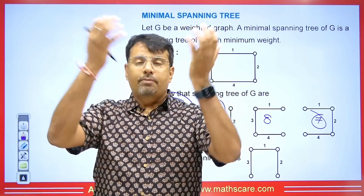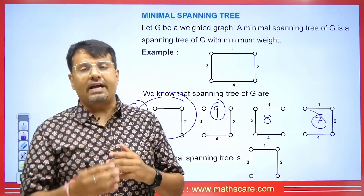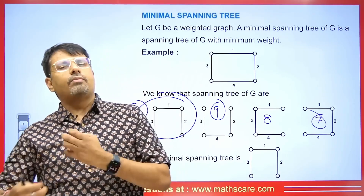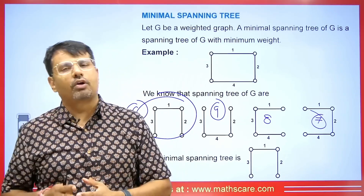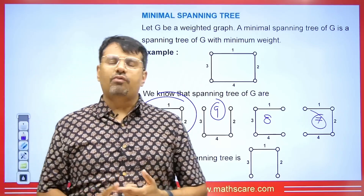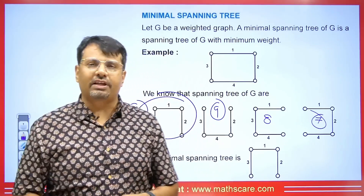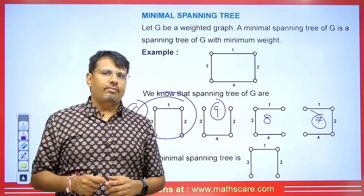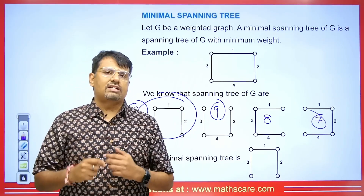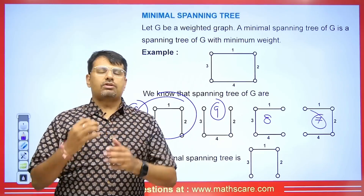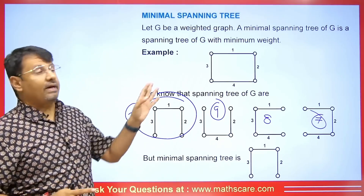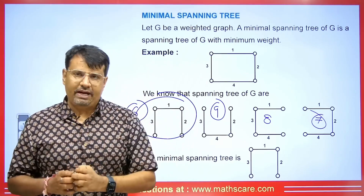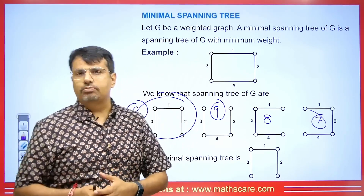The biggest problem for students here is that we have to make all the graphs and then see which spanning tree has the least weight — it takes a lot of time. For that, we have an algorithm. The first algorithm is Kruskal's algorithm, which lets us easily find which spanning tree is minimal. We also have another method called Prim's algorithm. I will explain how to obtain the minimal spanning tree using both. There are many exam questions from this topic.